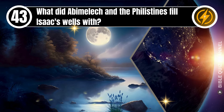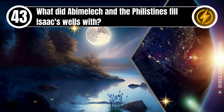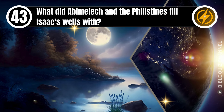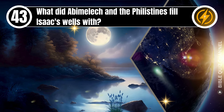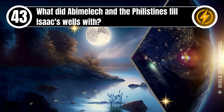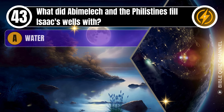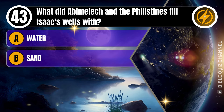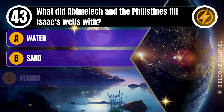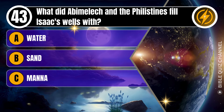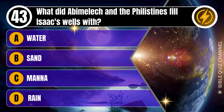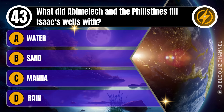Question 43. What did Abimelech and the Philistines fill Isaac's wells with? A. Water. B. Sand. C. Manna. D. Rain. You get 10 seconds.